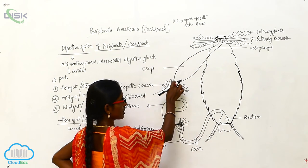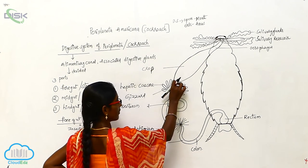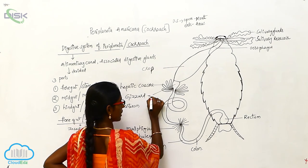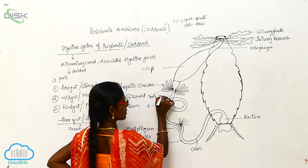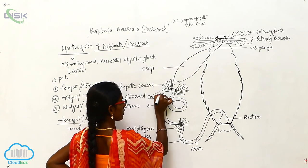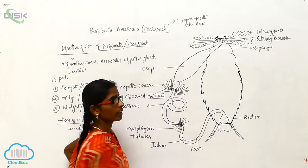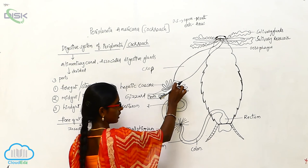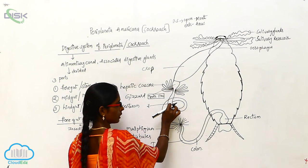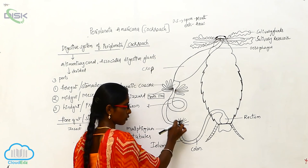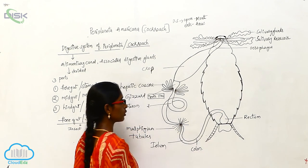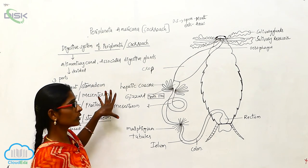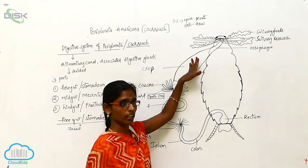From the crop, the food goes to the gizzard. The gizzard has teeth-like structures, and by those teeth the food material undergoes digestion in the gizzard. After that, the food material enters into the mesenteron, and from there it goes to the colon and rectum.